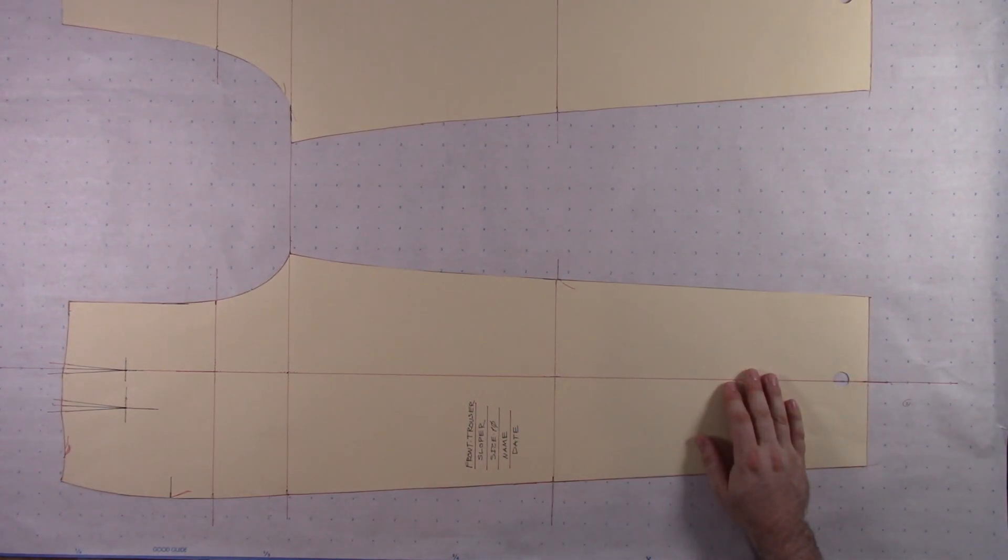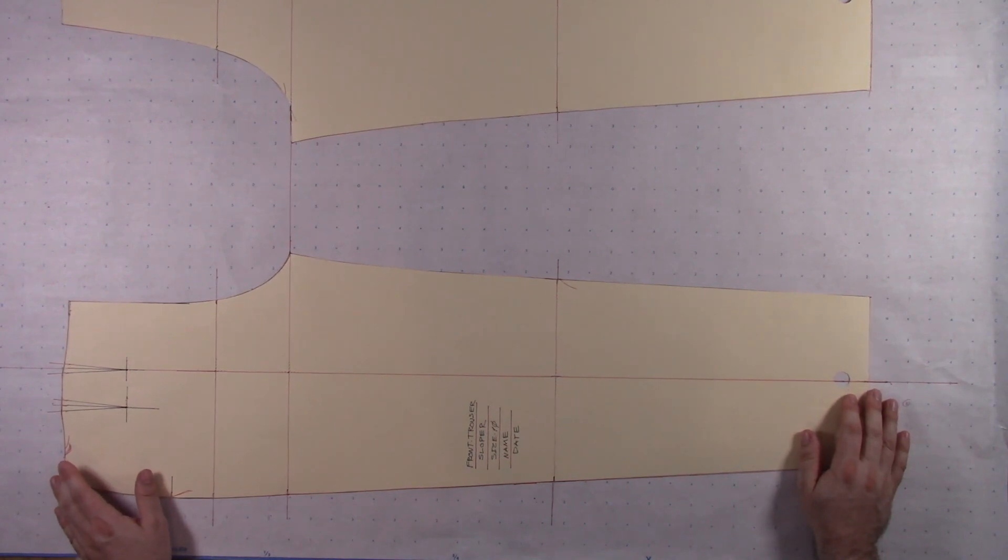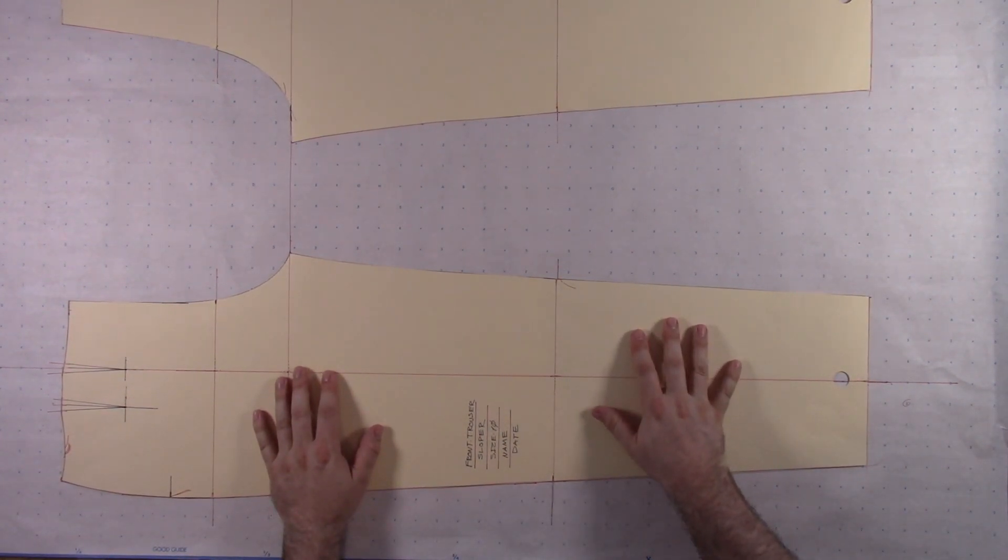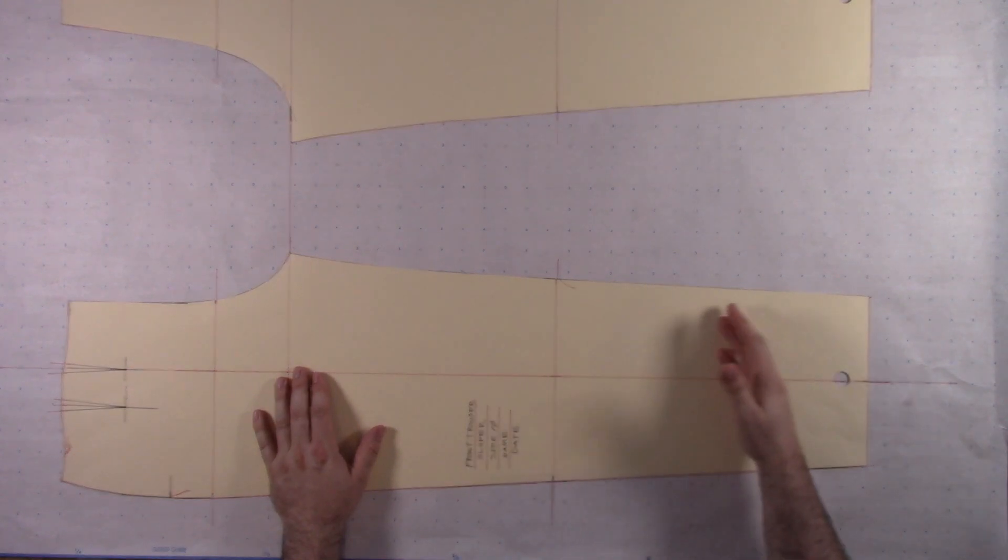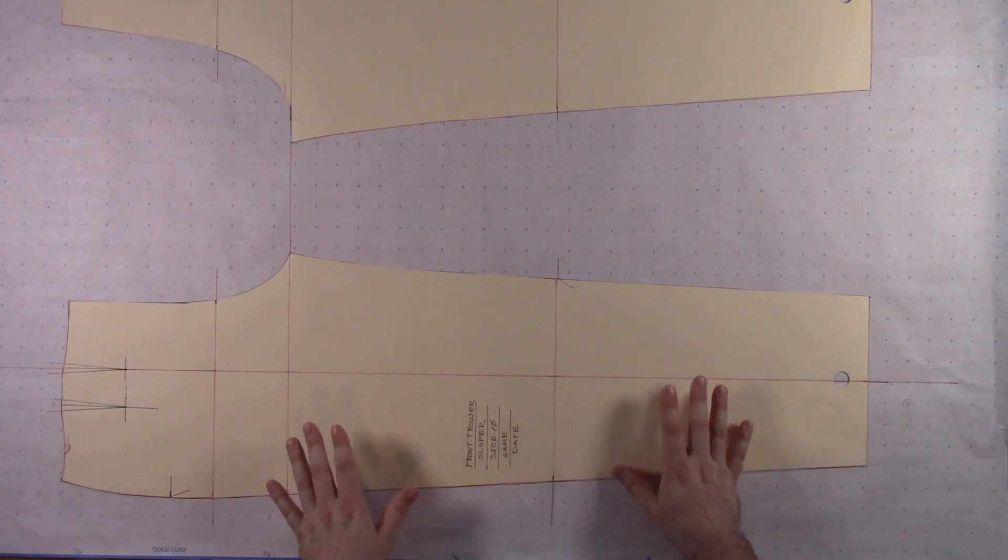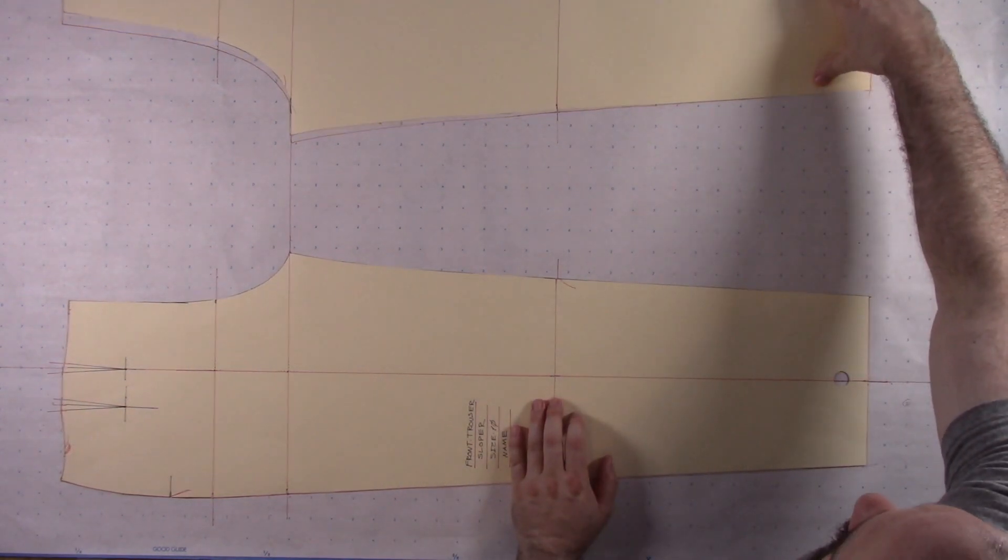And they're pretty simple to do. So we're going to stylize a pair of trousers here to be boot cut or bell-bottom, basically the same thing. So go ahead and trace off your front and back trouser slopers.